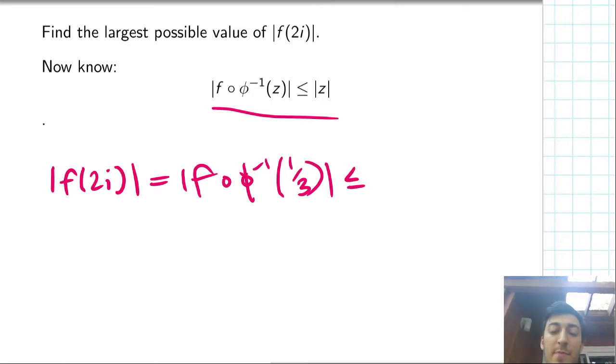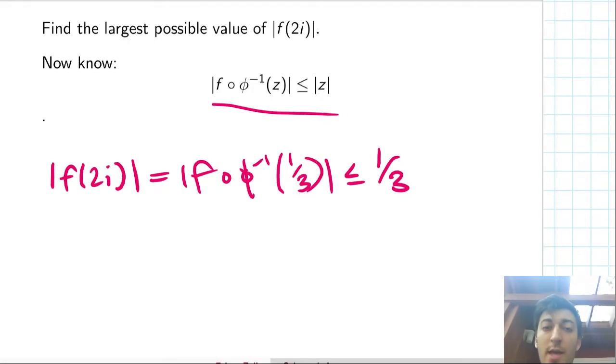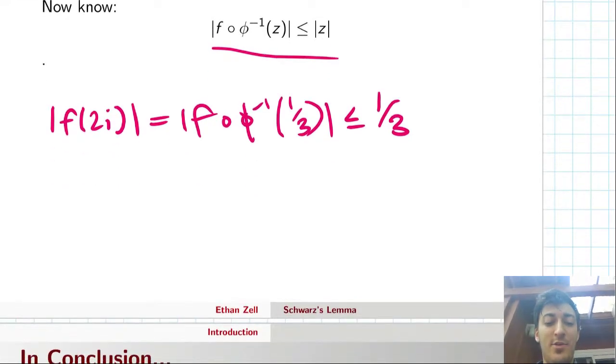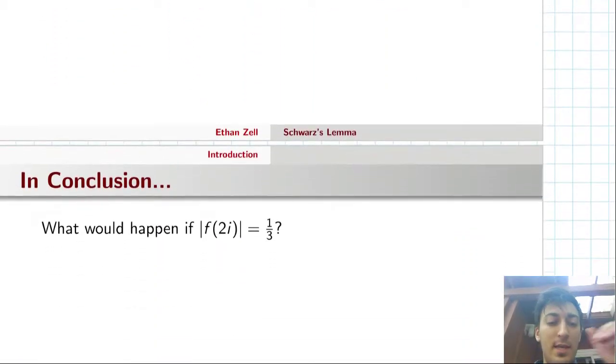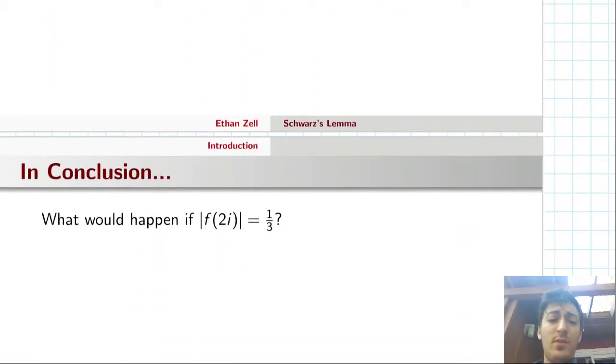And now we can apply our inequality. So we know that this is bounded above by the modulus of one third, which is just a third. So already we found a bound for f(2i), but maybe we can say a little bit more. And also I want to just use the second half of Schwarz's lemma just for an application.